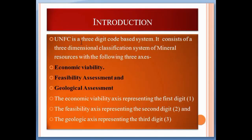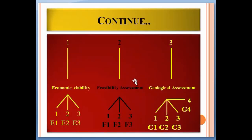The United Nations Framework Classification is a three-digit code-based system. It consists of a three-dimensional classification system of mineral resources with three axes: economic viability, feasibility assessment, and geologic assessment. The economic viability axis represents the first digit, the feasibility axis represents the second digit, and the geologic axis represents the third digit.